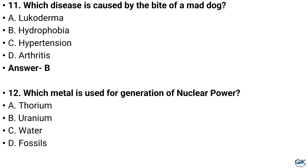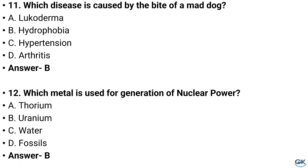Question number 12. Which metal is used for generation of nuclear power? Option A: Thorium, Option B: Uranium, Option C: Water, Option D: Fossils. And the answer is Option B: Uranium.